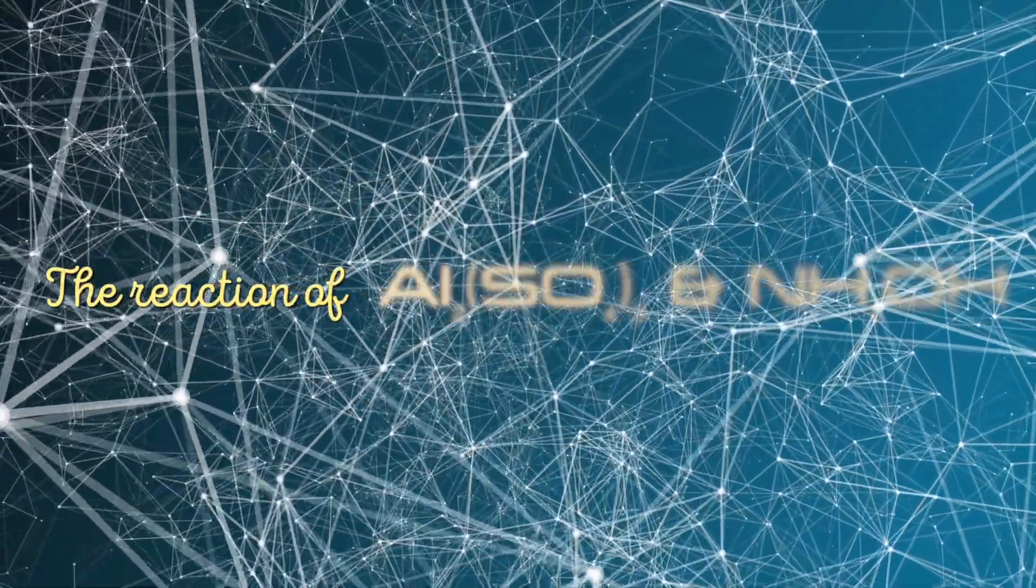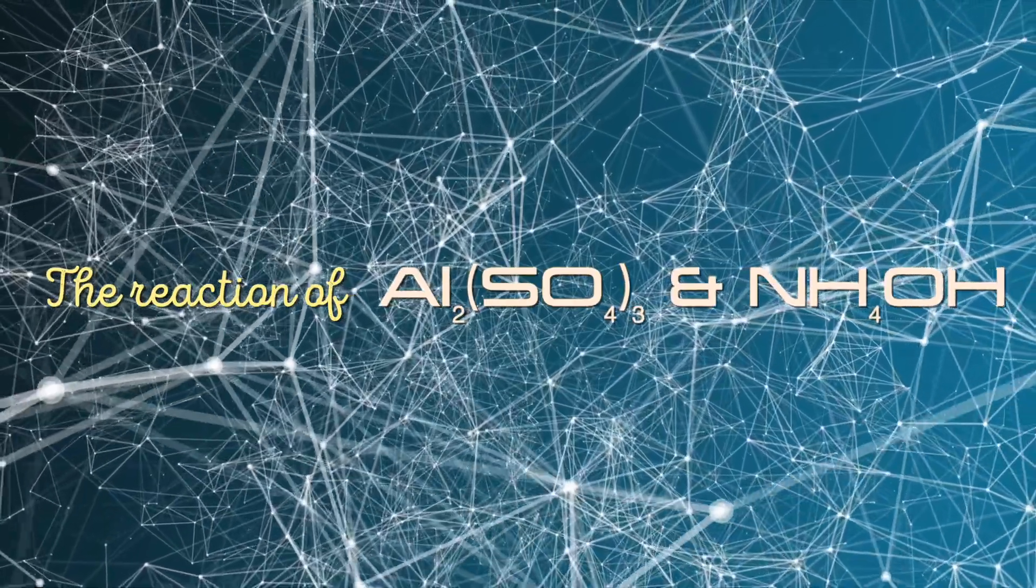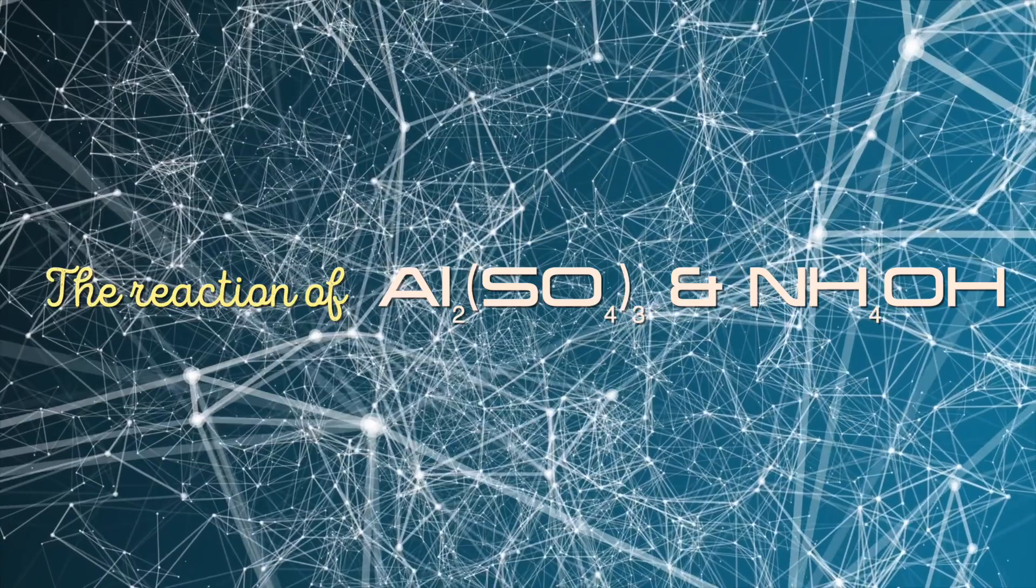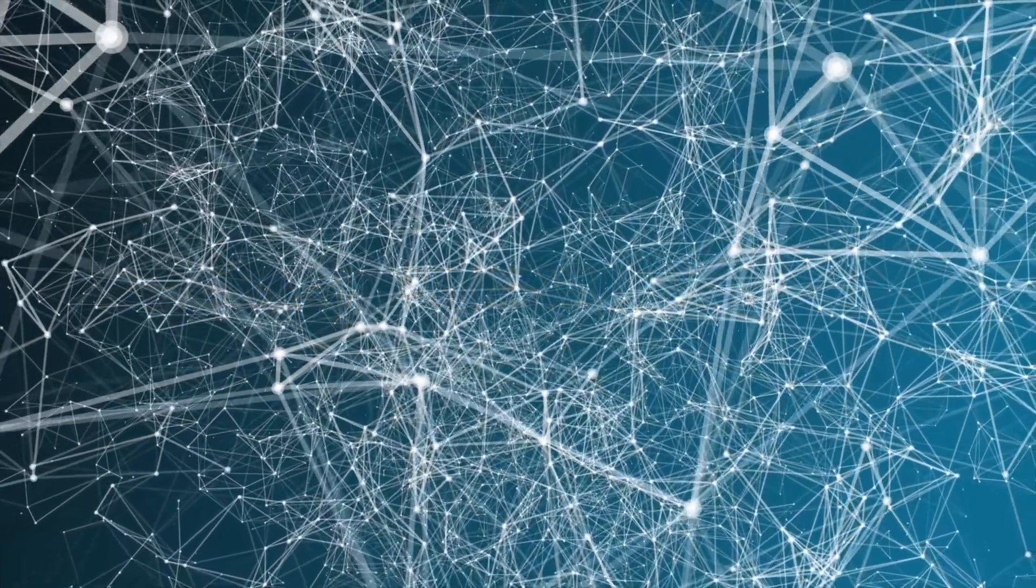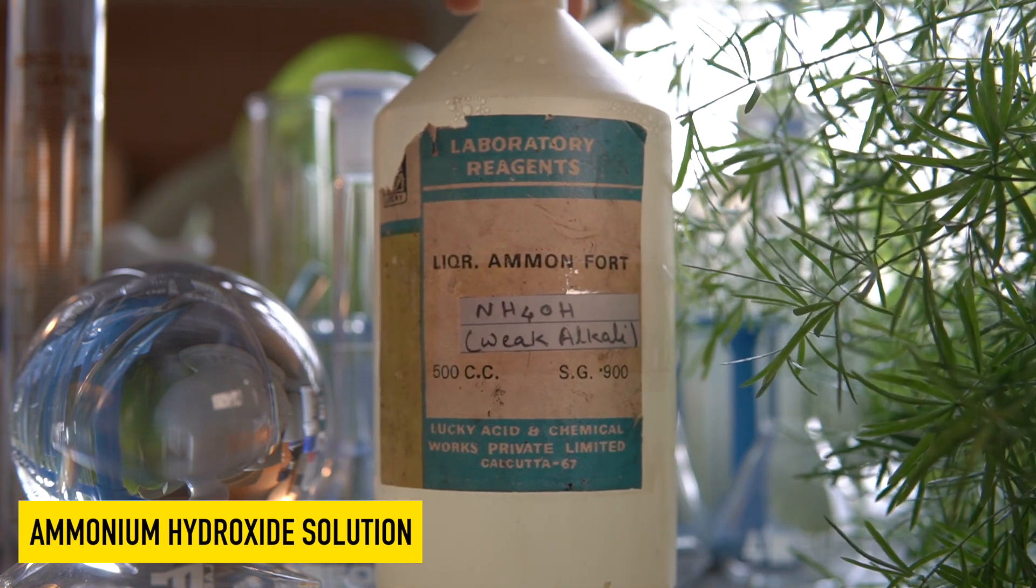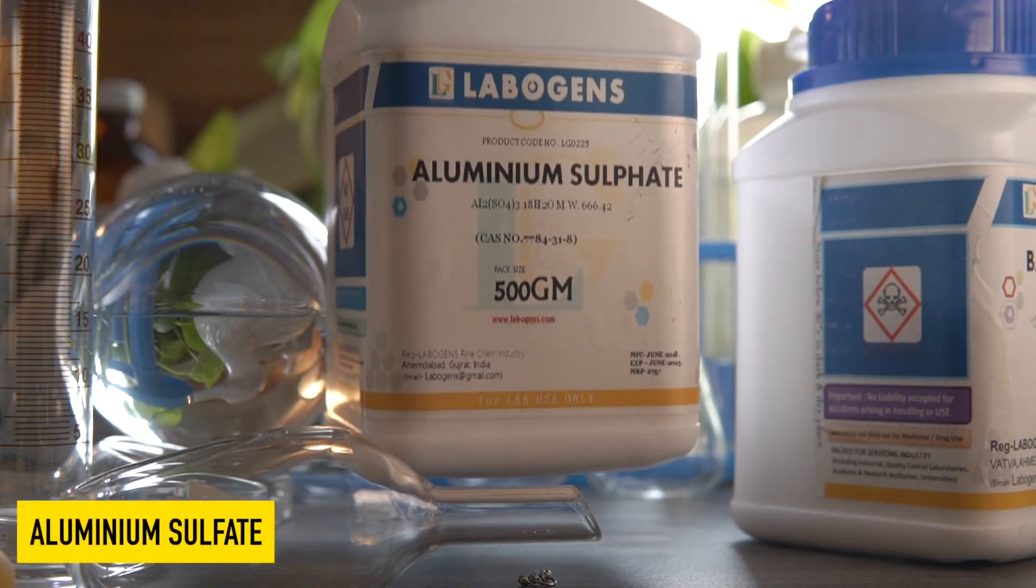Today we are going to observe a chemical reaction between aluminium sulphate and ammonium hydroxide. For this chemical reaction we need ammonium hydroxide and aluminium sulphate.